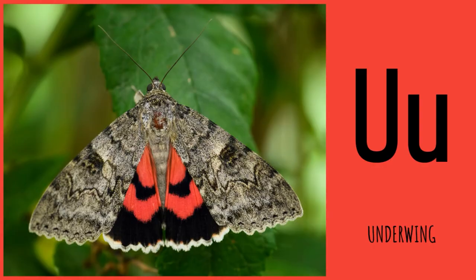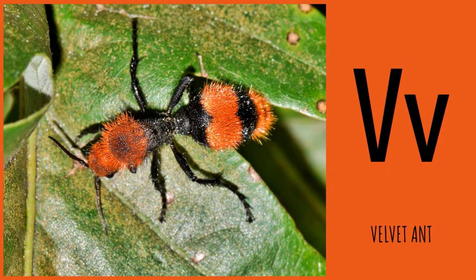U is for underwing, underwing. V is for velvet ant, velvet ant.